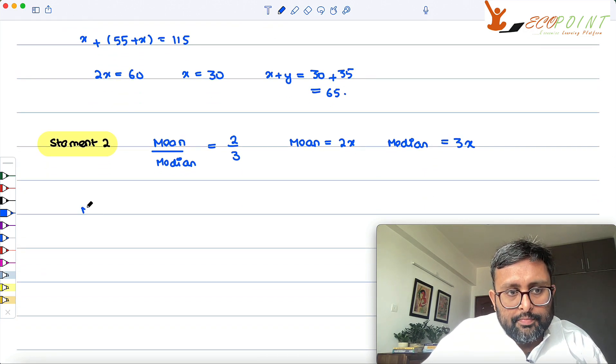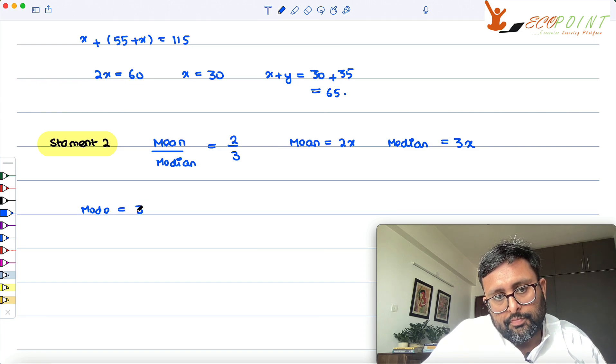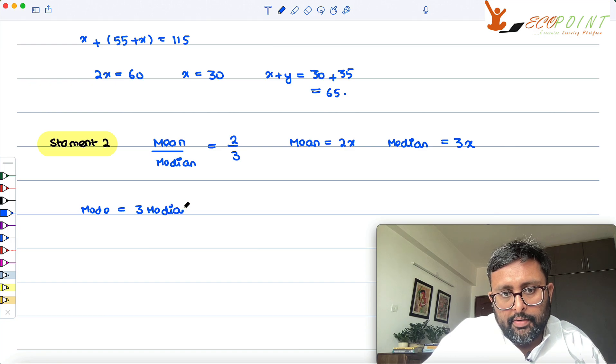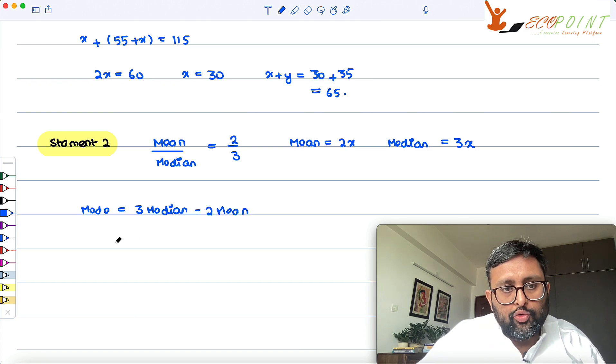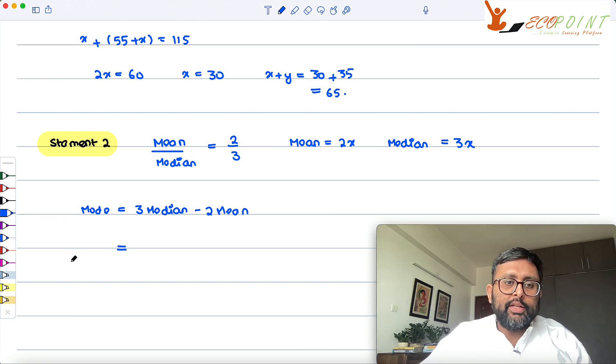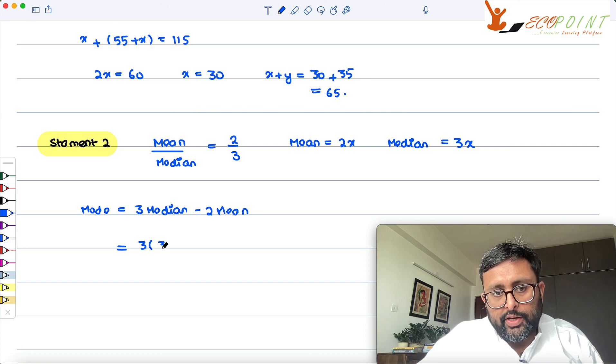Mode is 3 median minus 2 mean. Mode is 3 median minus 2 mean. So it means what? Median is what? 3x beta. Mean is what? 2x.